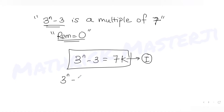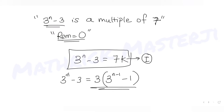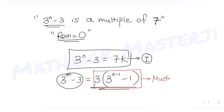Let's try to expand this idea. For 3^n minus 3, if I factor out 3 I get 3·(3^(n-1) minus 1). I want this expression to be a multiple of 7. Since 3 is already factored out, I need this bracket to be a multiple of 7. We'll use the mod concept here.